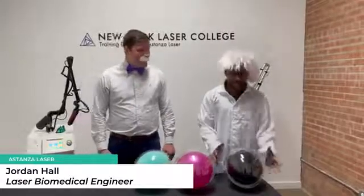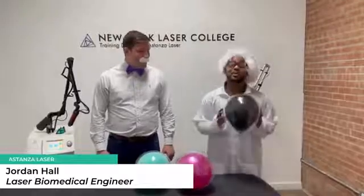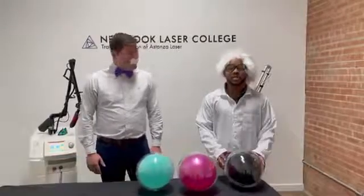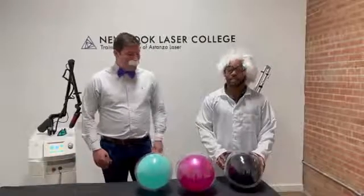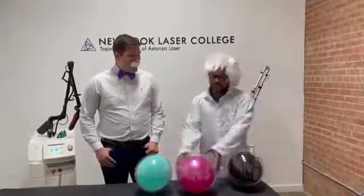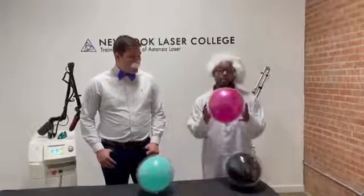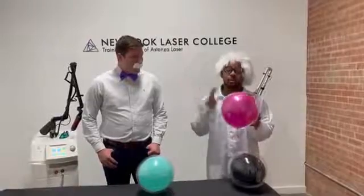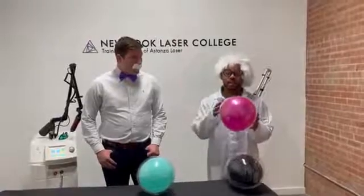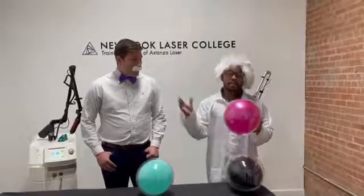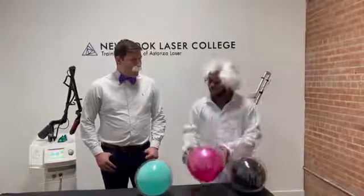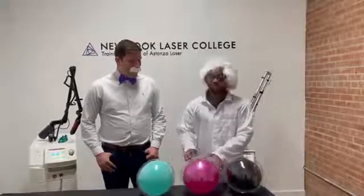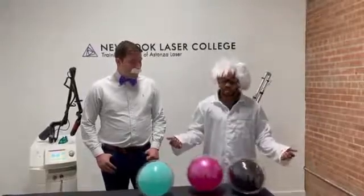Hello, my name is Jordan, and we're going to talk a little bit about absorption today. First, we need to talk about why we see certain things as certain colors. The reason that we see this balloon as this pinkish red color is because it absorbs all other wavelengths of light and reflects that pink and red color back to our eyes. Same thing with turquoise, same thing with all other colors that you see.